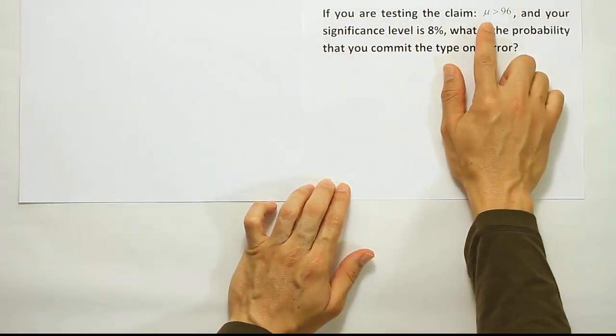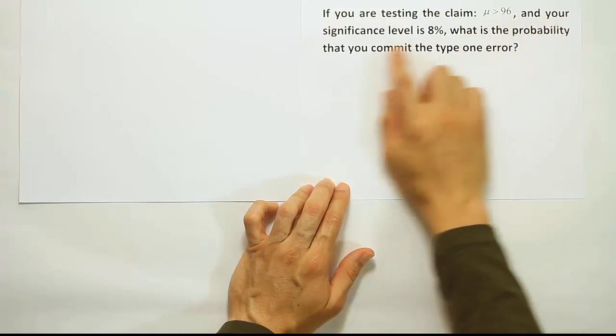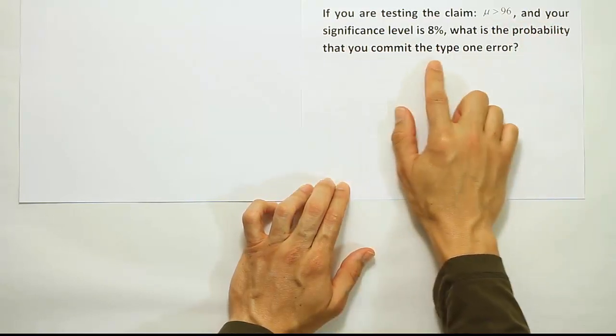If you are testing the claim the mean is greater than 96 and your significance level is 8%, what is the probability that you commit the type 1 error?